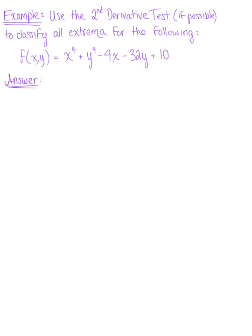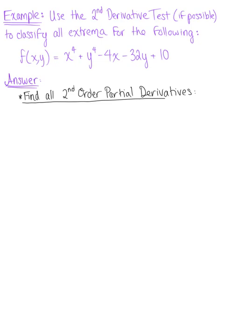Use the second derivative test to classify all extrema for the following function. The first thing we need to do is find and simplify the first order partials. We'll need the second order partials too, so we might as well find them all. Finding the partial derivative of the surface with respect to x, we have 4x cubed minus 4.